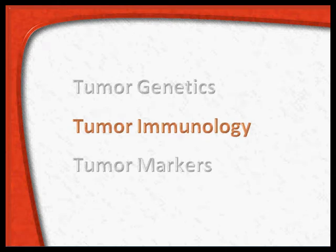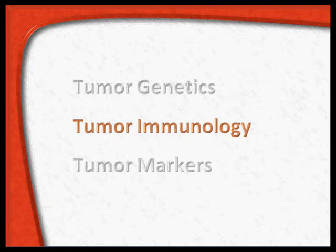Now we need to understand a bit about the immunology of tumours. In this section we are going to see what are the ways in which normally we are protected from tumour formation in our body, and how in patients of cancers this protection is overcome, or there is an escape of the tumours from the immunological surveillance.